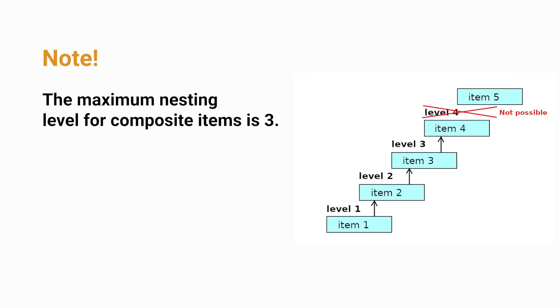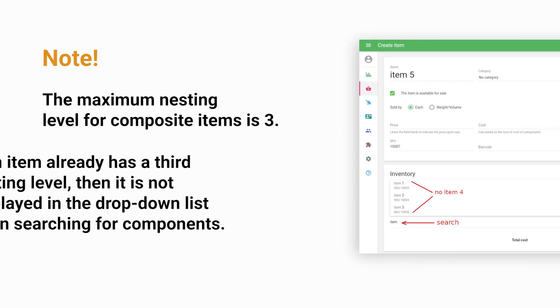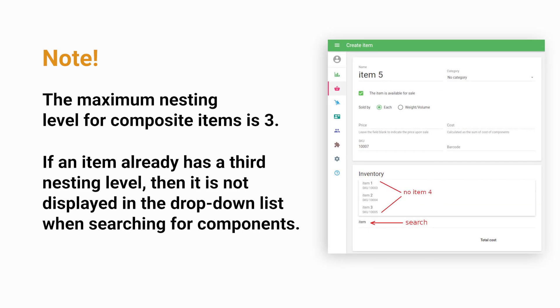Note: the maximum nesting level for composite items is 3. If an item already has a third nesting level, then it is not displayed in the drop-down list when searching for components.